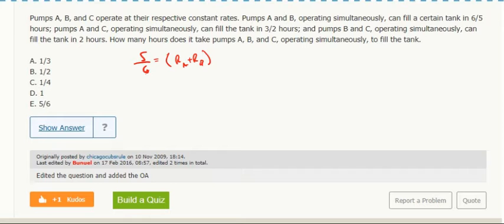Pumps A and C can fill the tank in three over two hours, so multiply by two-thirds. And pumps B and C can do the tank in two hours.